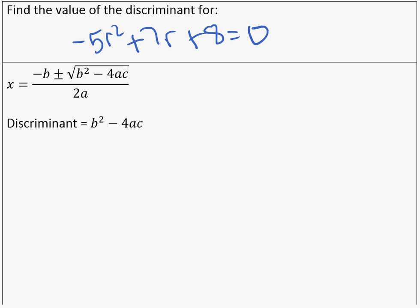For this example, we're going to find the value of the discriminant for this quadratic equation: negative 5r squared plus 7r plus 8 equals 0.